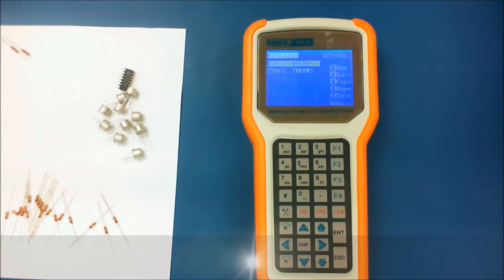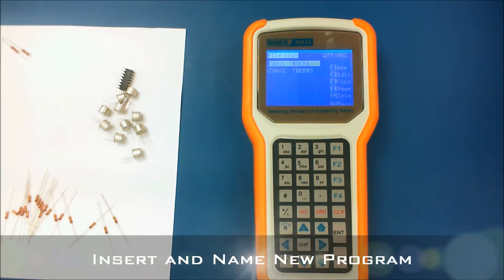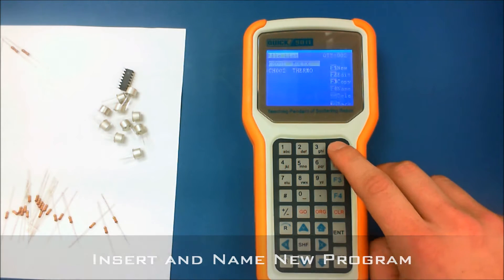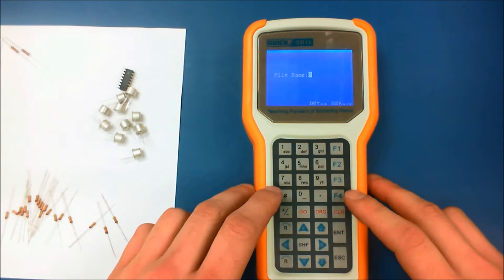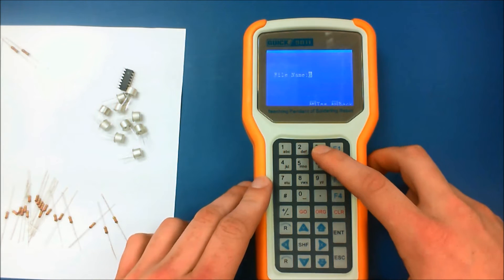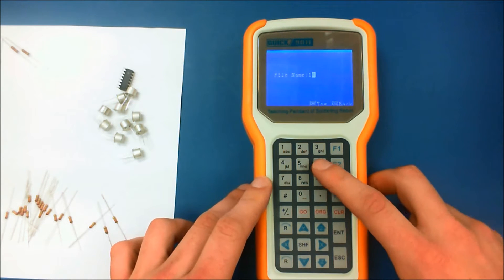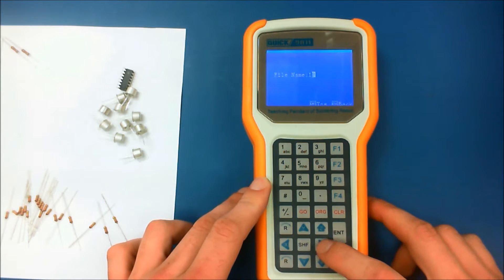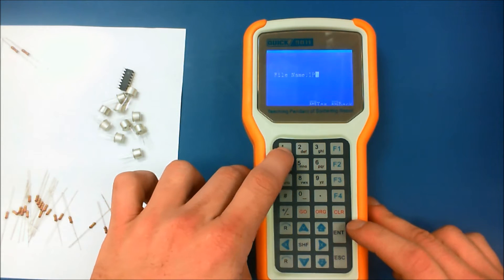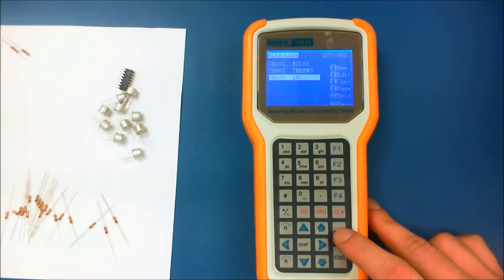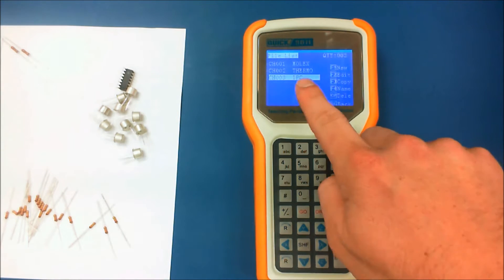So in order to begin we'll go ahead and insert our program name. Located on the right side of the screen we'll have a file new option. By pressing F1 we can insert a file name. Using the alphanumeric keys you can go ahead and enter your file name now. I've selected just simply IPC to designate this program. Once you're complete go ahead and press enter to then solidify that program into the system.